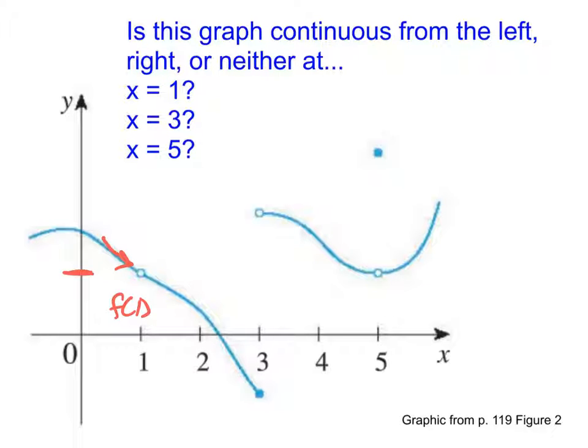Now, it's approaching this height, whatever that is, but we don't actually know what that value is of the function there because it's an open dot. It's a hole there. And so because that does not exist, then this one is a neither.